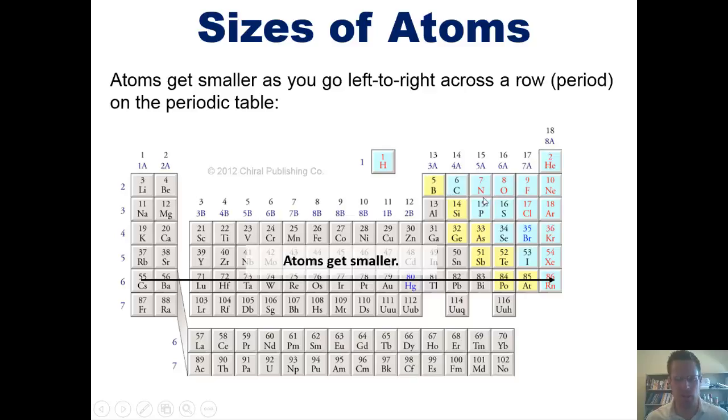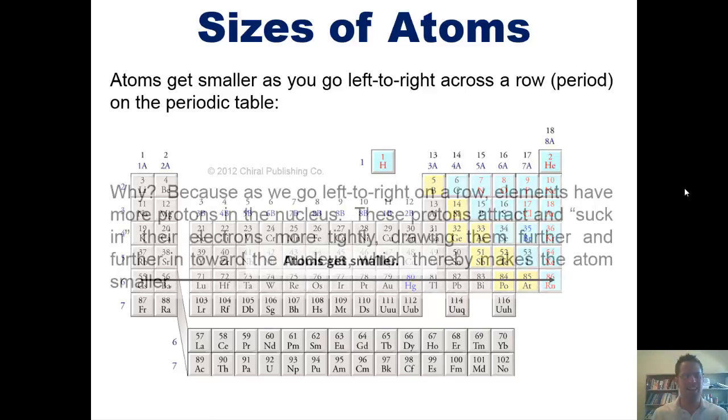So you might be tempted to think, well, oxygen should be bigger than nitrogen, and nitrogen should be bigger than carbon because you're getting more electrons. So as it turns out, it's the exact opposite. Oxygen's smaller than nitrogen, which is smaller than carbon, which is smaller than boron. So why is that?